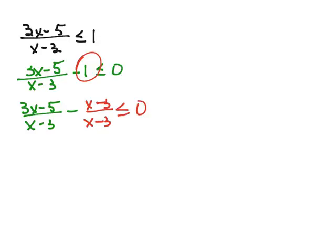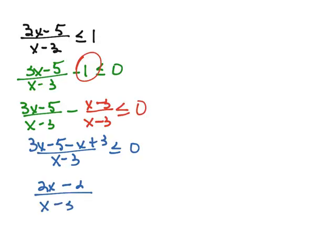And now we have a common denominator so we can rewrite our fraction as 3x minus 5 minus x minus a negative 3 would be plus 3 is less than or equal to 0. And combining like terms we end up with 2x minus 2 over x minus 3 is less than or equal to 0.